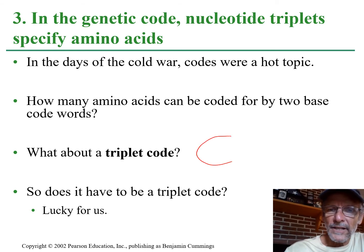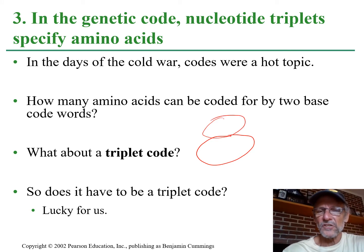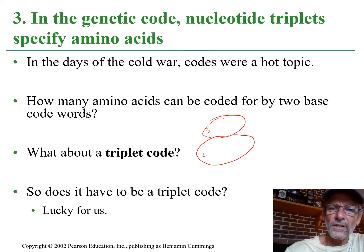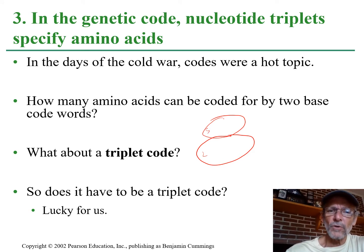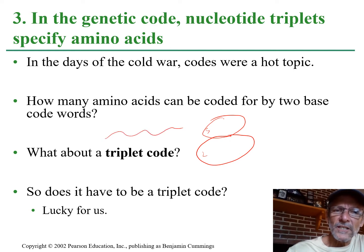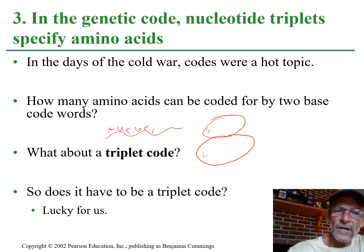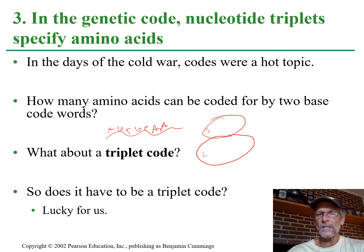These ribosomes kind of look like this — we'll get to them in a second. They look like snowmen: a big part and a little part, a large subunit and a small subunit. These are like the chefs in our little analogy, and they're going to somehow read this piece of RNA that has these bases AUCG in all kinds of orders that mean all kinds of different recipes for all kinds of different proteins.